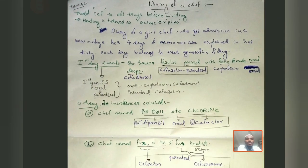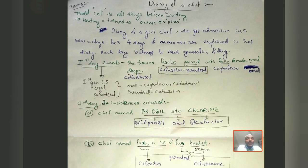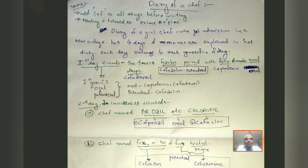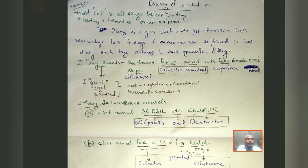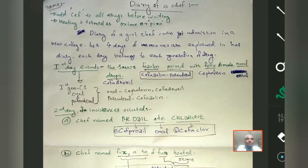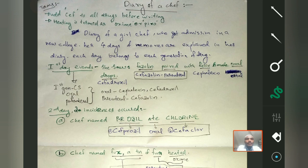In this video we are going to discuss another beta-lactam antibiotic known as cephalosporins. Coming to classification, it is usually very difficult to study the classification of cephalosporins because all names begin with 'ceph' or 'cef'. Spellings can be S-C-E-F or C-E-P-H, so it is difficult to memorize. We have a mnemonic story to help remember the classification easily.